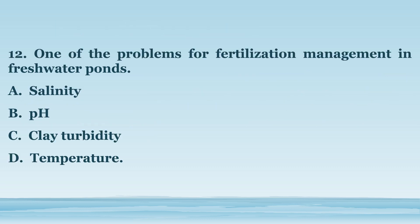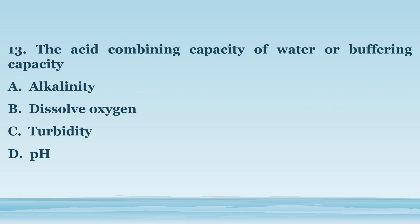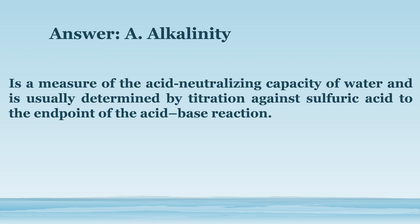Number 12. One of the problems for fertilization management in freshwater ponds. A. Salinity. B. pH. C. Turbidity. D. Alkalinity. The answer is letter A. Alkalinity. Is a measure of the acid-neutralizing capacity of water and is usually determined by titration against sulfuric acid to the endpoint of the acid-base reaction.